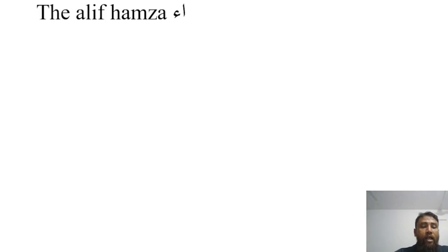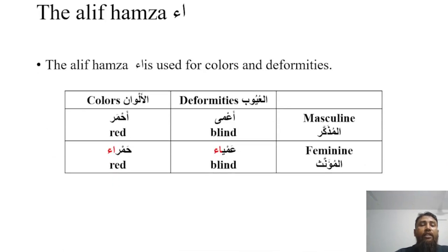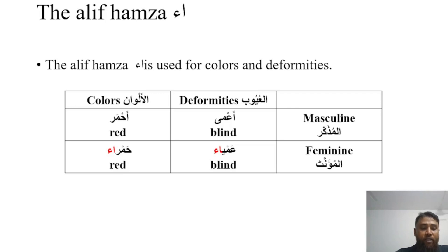The third form is alif hamza. The alif hamza is used for colors or deformities. Here are some examples of color and deformity words in masculine and feminine. The masculine word for 'blind' is amaa, and the feminine form for 'blind' is amiaw. The second example is 'red' — the masculine form is ahmar, and the feminine word is hamra.